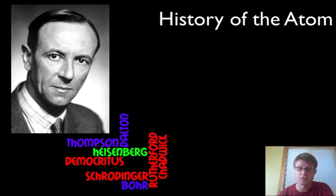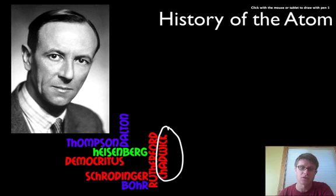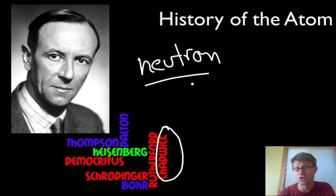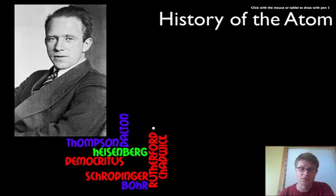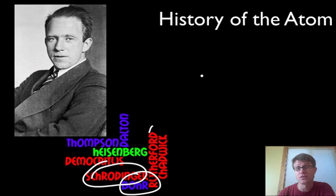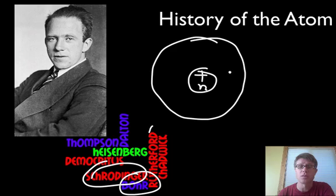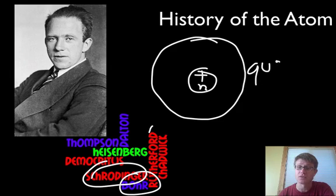We eventually get to Heisenberg, but first there's Chadwick, who discovered the neutron. It took much longer to discover the neutron because it has no charge, but it accounted for the missing mass. Then finally we have Werner Heisenberg, who figured out that both Bohr and Schrödinger were right. An atom has a positive charge with neutrons on the inside, but there's a wave of probability out here for the electrons. So is an electron a particle? Yes, but it's described by Schrödinger's idea of a wave. This is the quantum theory we have today — it describes how electrons move.